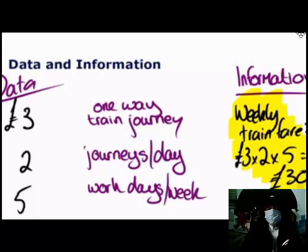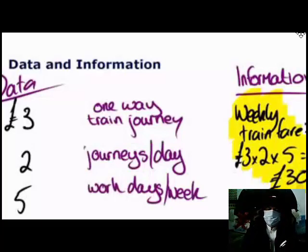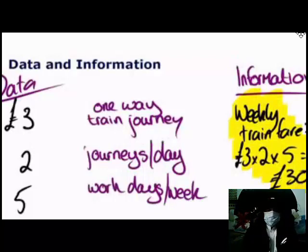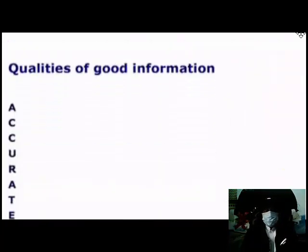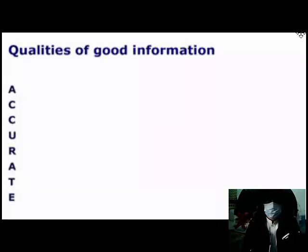The final thing we want to consider in relation to information is what makes something good information. There's a huge amount of information out there — we only need to look on the internet to see that. So which information is useful in any given situation and which is just wasting our time? Good information will have a number of characteristics, and there is an acronym to help you remember these. We're going to go through the qualities of good information.